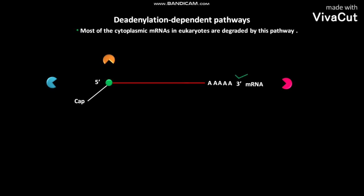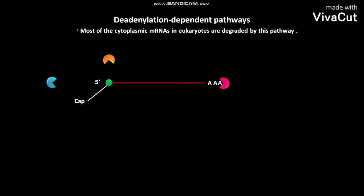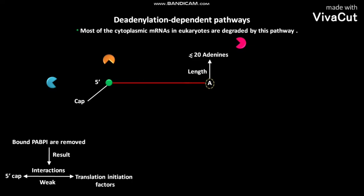In this pathway, the 3' end of the mRNA has a poly-A tail. The enzyme called deadenylase or deadenylating nuclease progressively shortens the poly-A tail until it reaches a length of 20 or fewer adenine residues. Due to this poly-A tail shortening, the bound PABP1 are removed. This PABP1 removal causes the weakening of interactions between the 5' cap and translation initiation factors.